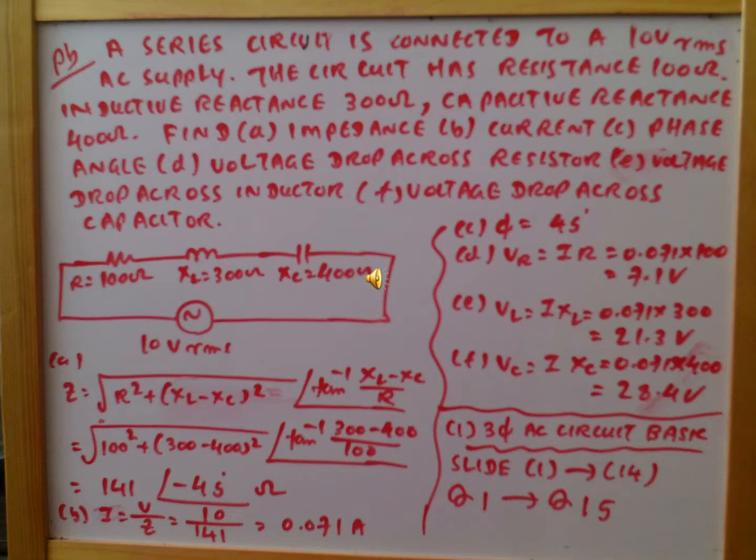We can calculate the current value. I equals V by Z. V is 10, Z is 141, so we get 0.071 amperes. The phase angle is 45 degrees. The current flows into the resistor.